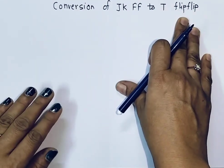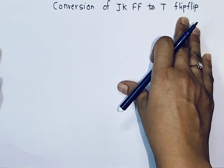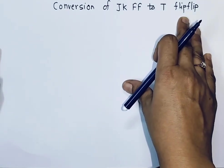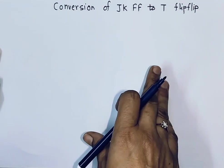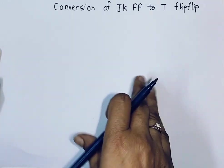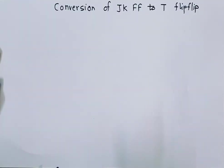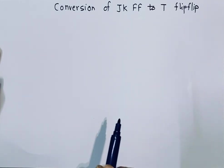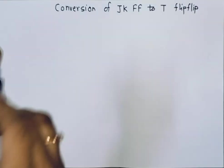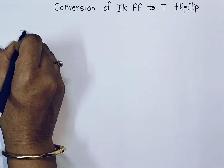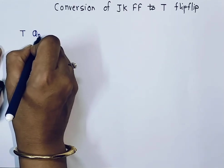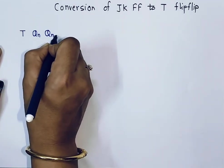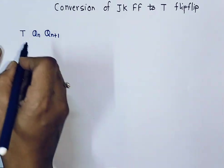We must know how a T flip-flop works, so you must know the truth table of a T flip-flop or toggle flip-flop. In a T flip-flop, if the T input is 0 then the next state output follows the present state output, and if T input is 1 then the next state output is the complement of the present state output. Here I'll write the truth table for the T flip-flop: T input, Qn is present state output, and Qn+1 is next state output.